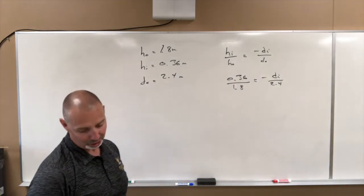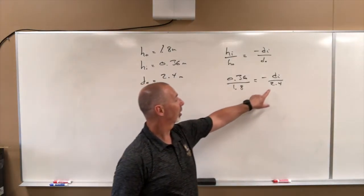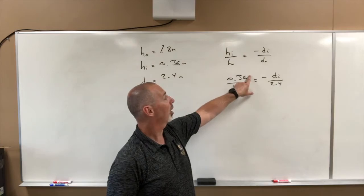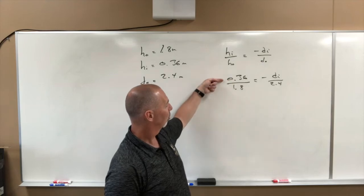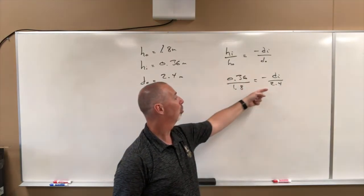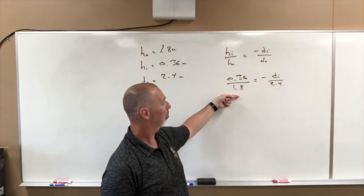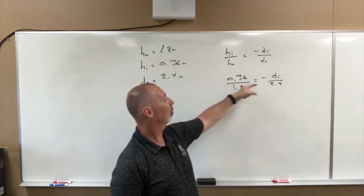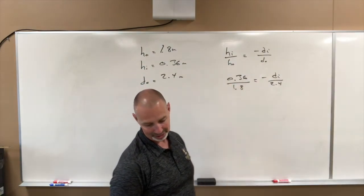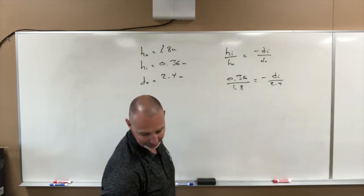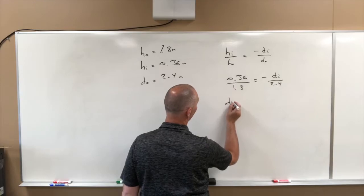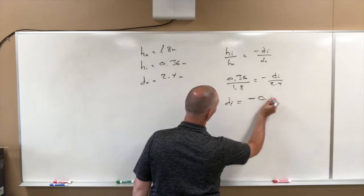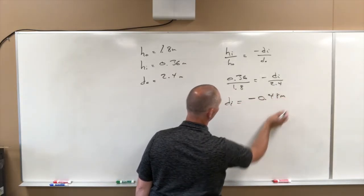If we solve for DI correctly, you're just going to take this 2.4, multiply it up here, divide by negative 1. So 0.36 times 2.4 divided by 1.8, and then we have to divide by the negative 1 to get rid of that negative sign, and we will get a DI of negative 0.48 meters.